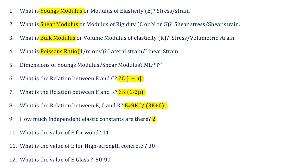Fourth question: what is Poisson's ratio? Poisson's ratio is nothing but the ratio of lateral strain to linear strain. It is denoted by the symbol 1/M or Mu (μ).